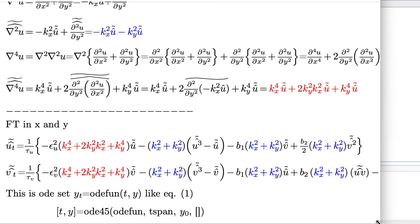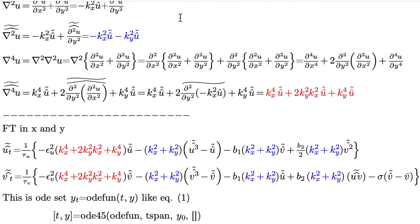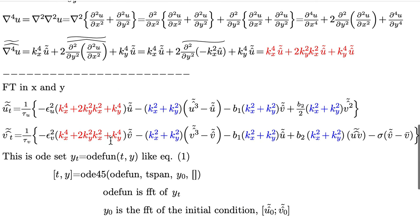This is the set of Cahn-Hilliard equations in the frequency domain and in two dimensions. This is already in the frequency domain, so what I'm going to do is write a function in MATLAB to contain this expression. That function will operate in the frequency domain. There are some nonlinear terms like u cubed, v squared, and products of u and v.